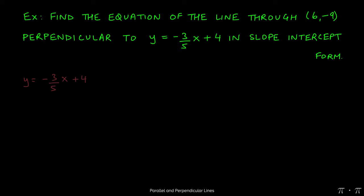So we start by trying to find the slope of the given line, y = -3/5x + 4. Thankfully it's already in slope-intercept form, so we don't have to do any manipulation to get the slope out of it. The slope is -3/5.